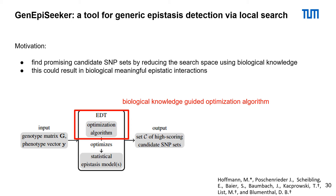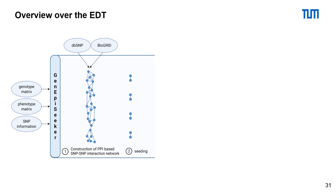Our motivation was to find promising SNP sets by reducing the search space using biological knowledge, which could result in biologically meaningful epistatic interactions. GenEP Seeker uses a genotype matrix and a phenotype matrix as input. It also needs additional SNP information like location or rs-ID. We further require a protein-protein interaction network and dbSNP information.